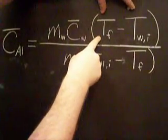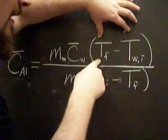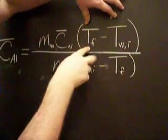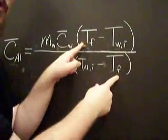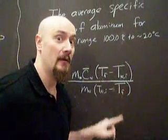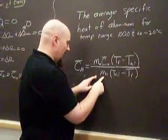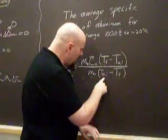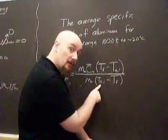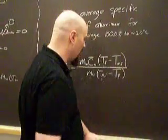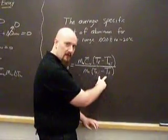Now we have the change in temperature: the final temperature minus the initial temperature of the water. Notice there are two subscripts here and only one subscript on the aluminum side, because the final temperature of the aluminum has no other subscript — they should be equal because they're reaching thermodynamic equilibrium. Below we have the mass of the aluminum, which we can find. The initial temperature of the aluminum is given as 100 degrees Celsius. Then the final we measure. Notice it's initial minus final because that minus sign was distributed into the aluminum term.